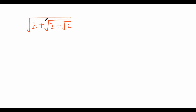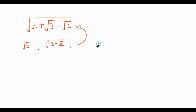Today we're going to talk about, in particular, this sequence of nested roots: square root of 2, then square root of 2 plus square root of 2, then square root of 2 plus square root of 2 plus square root of 2, and then with 4 twos, 5 twos, and so on. The first question we might ask is: does this sequence converge to some value, or does it go to infinity as we continue the sequence?